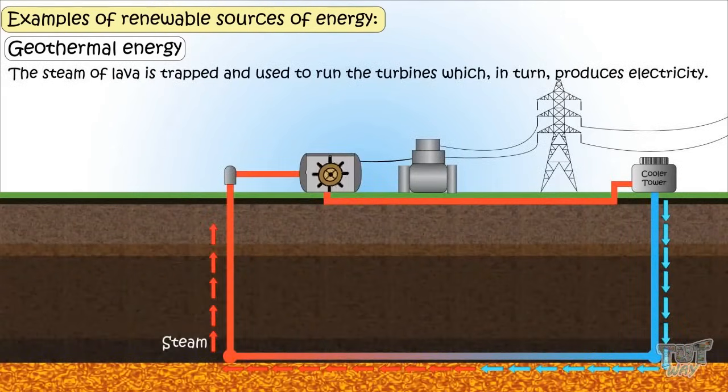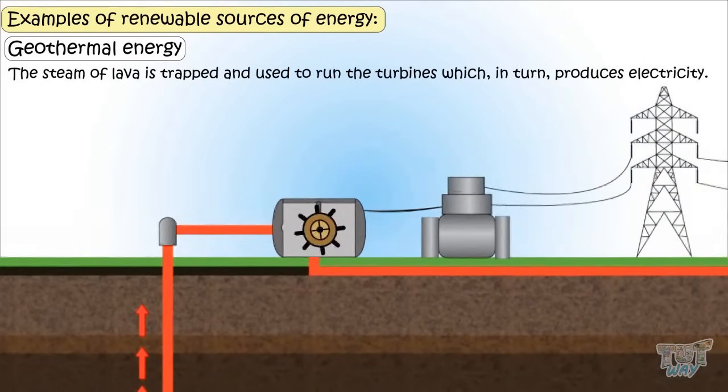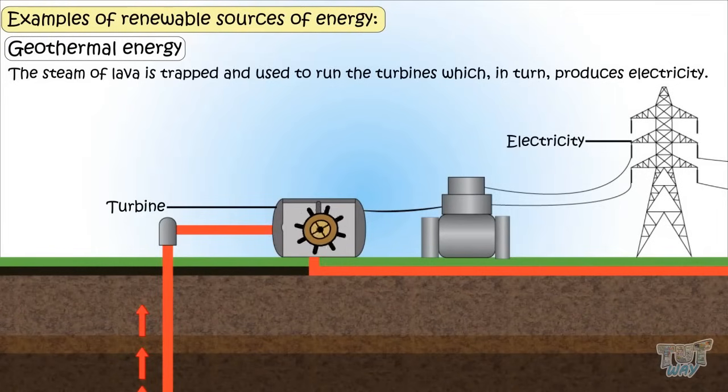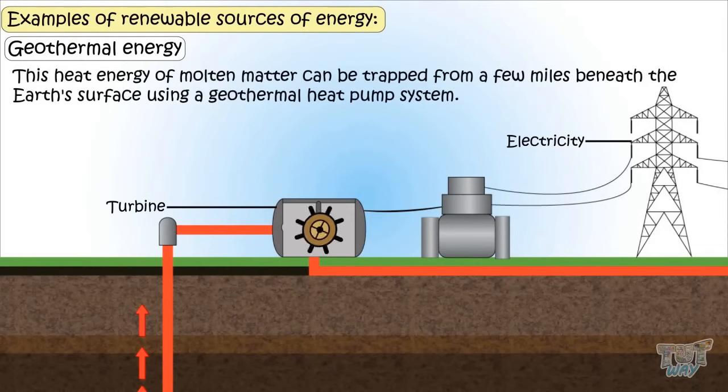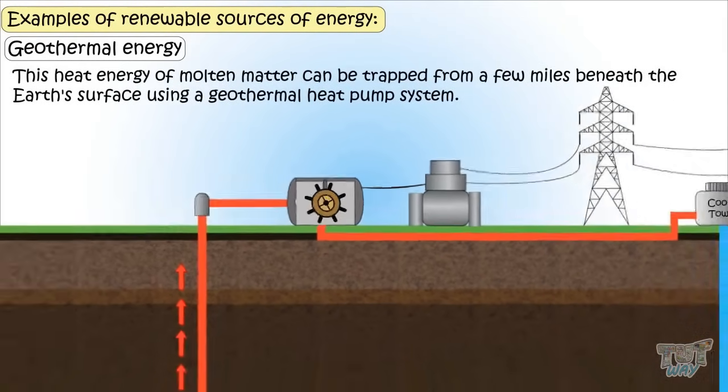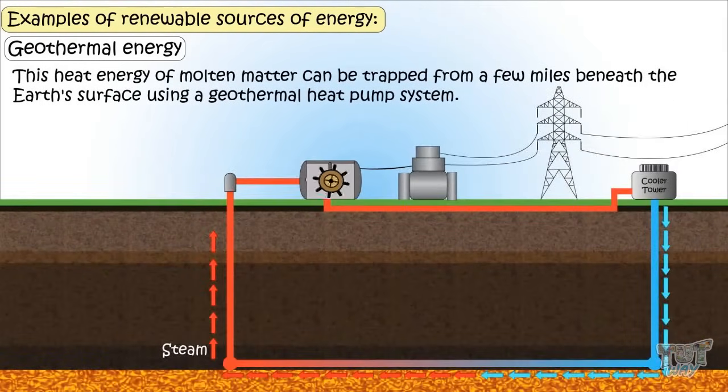Steam or lava is trapped and used to run the turbines, which in turn produce electricity. It's a clean and sustainable energy. This heat energy of molten matter can be trapped from a few miles beneath the Earth's surface using a geothermal heat pump system.